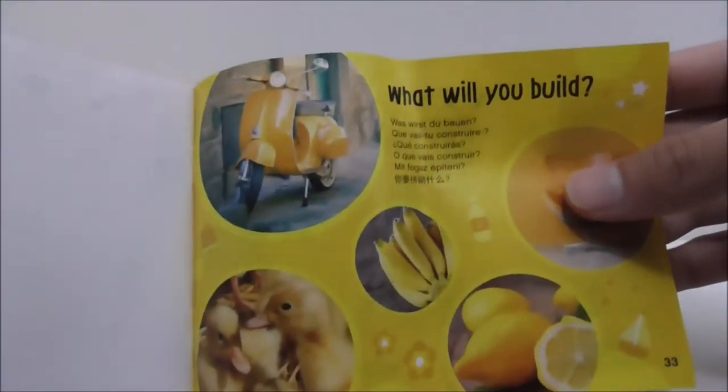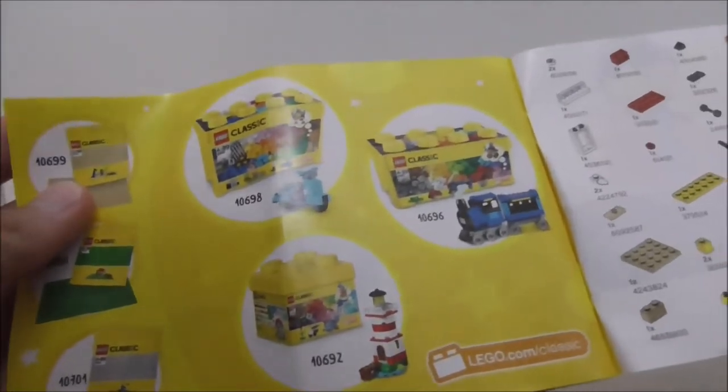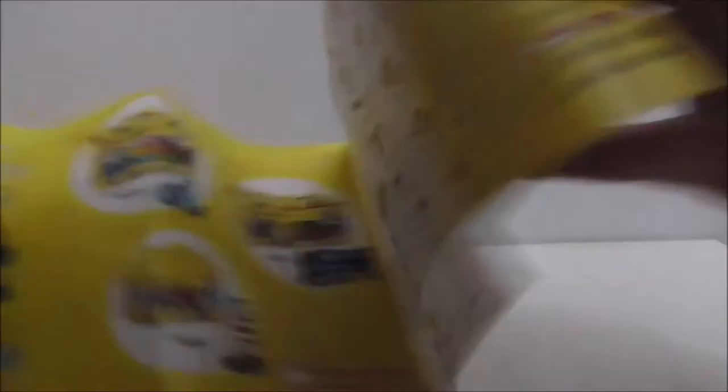You got this plane. Here it says what will you build. You got other sets from the classic line and you got the parts list. But aside from that, that's pretty much it for the instructions.